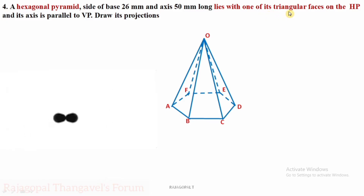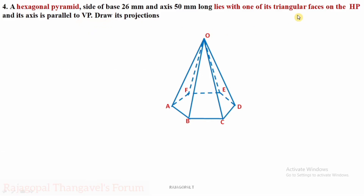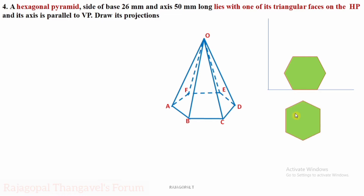The axis is 50 mm long and lies with one of its triangular faces on the HP, with the axis parallel to VP. Draw its projections. First, what is a triangular face? In a hexagon having six sides, there will be six triangular faces. For example, OBC is one triangular face. If the triangular face OBC is on HP, then the base edge BC is also on HP — so BCH is on HP.